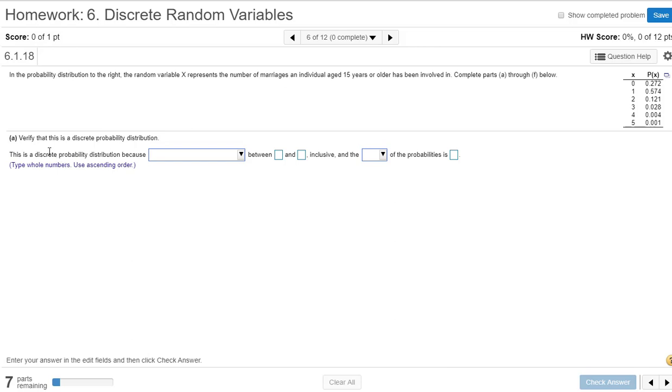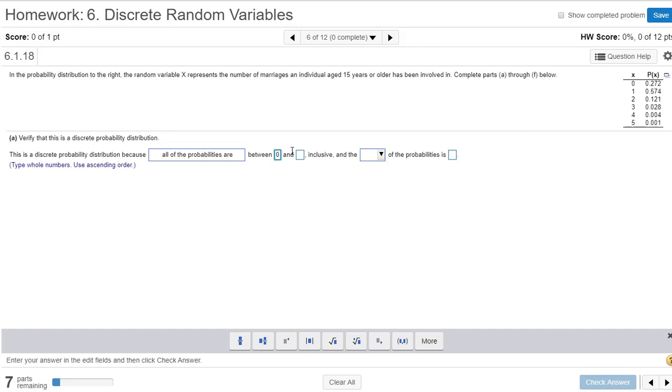Part A: Verify this is a discrete probability distribution. Remember what the elements of the discrete distribution are. It's a discrete distribution because all the probabilities are between which two values? Good. 0 and 1. So I'm going to put a 0 and 1.